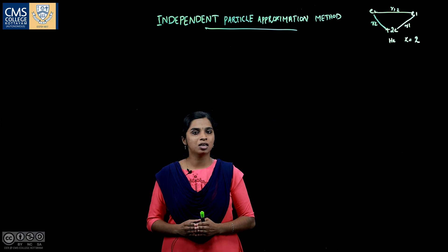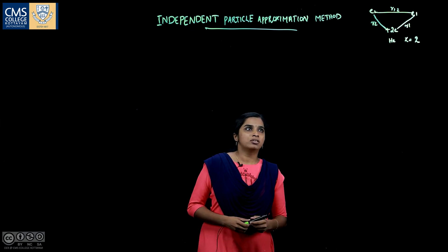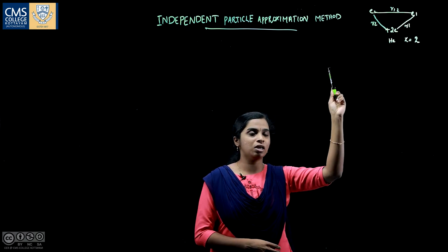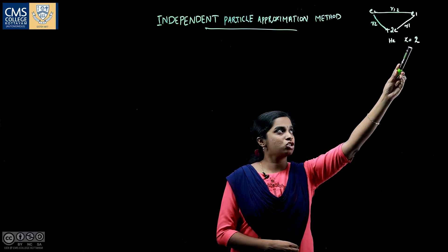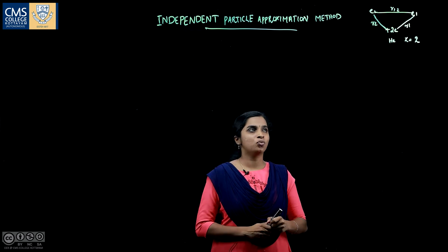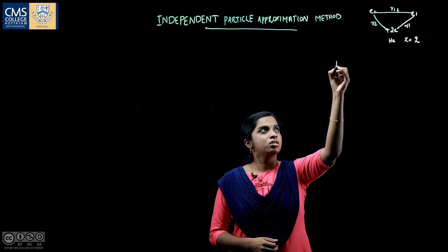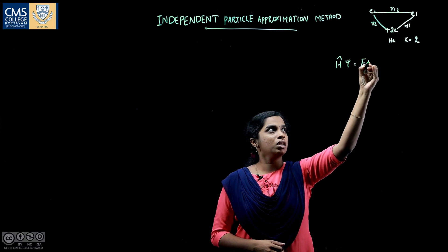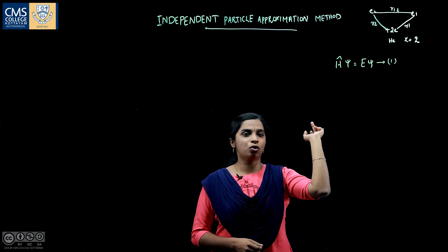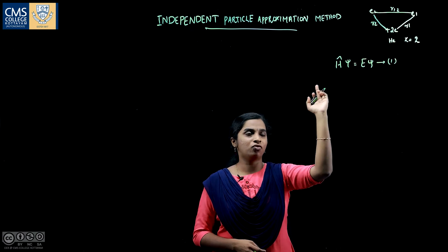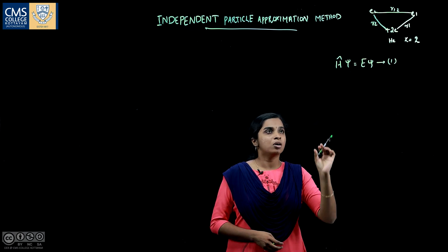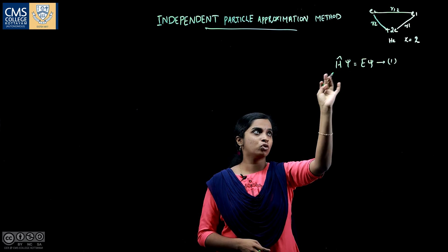Let us illustrate this method by taking the helium atom as an example. The helium atom has a nucleus with charge +2e and two electrons, with atomic number Z equal to 2. Our aim is to find the energy for this system, so we need the Schrödinger wave equation: H·ψ = E·ψ. Here H is the Hamiltonian operator — the total energy operator — and ψ is the wave function. We need the expression for this Hamiltonian.